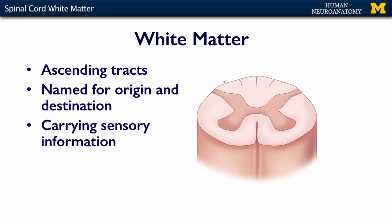Tracts are named for their origins and destinations. We have a bunch of ascending tracts — that's information coming in from the periphery and going up to the spinal cord. Some of these things are going to synapse in the cord before they go up, and some of them are just going to go straight through. But they're all named for their origin and their destination, and they're carrying sensory information.